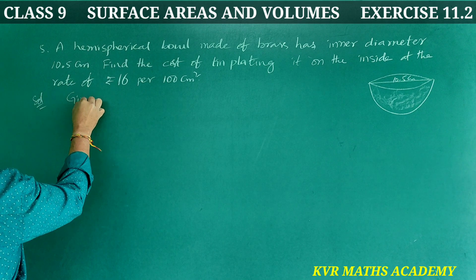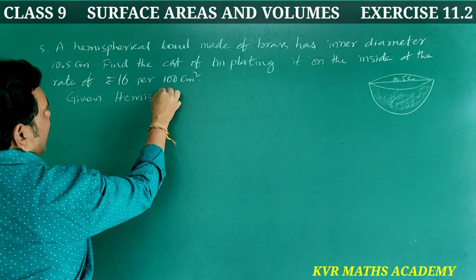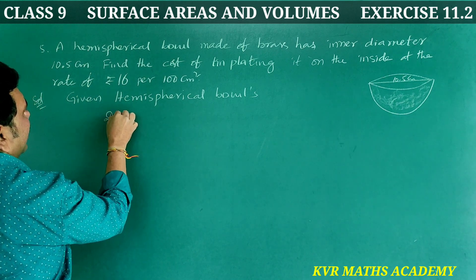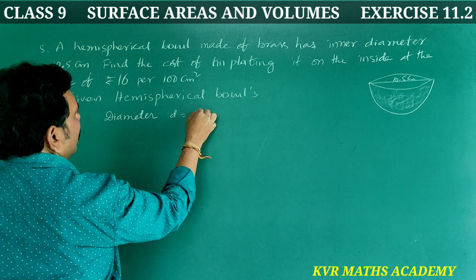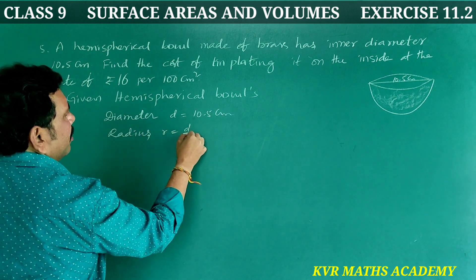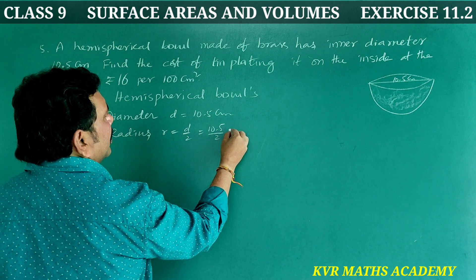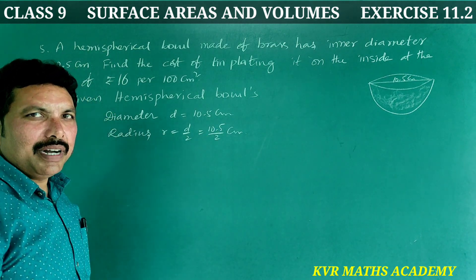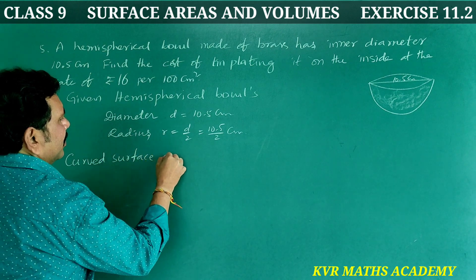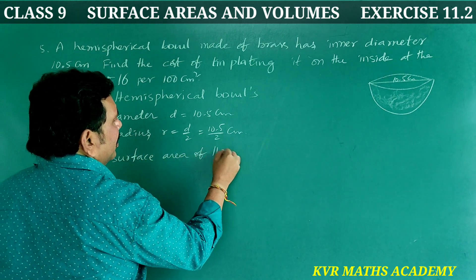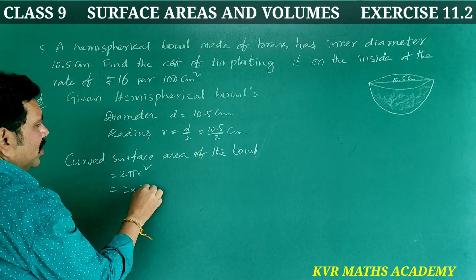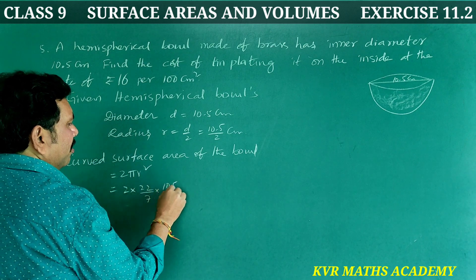Solution. Given: hemispherical bowl with diameter d = 10.5 cm. Therefore, radius r = d/2 = 10.5/2 cm. Curved surface area of the bowl = 2πr² = 2 × (22/7) × (10.5/2) × (10.5/2).